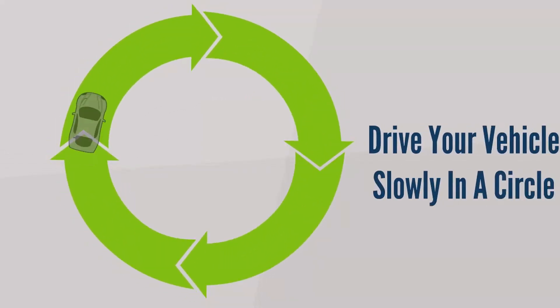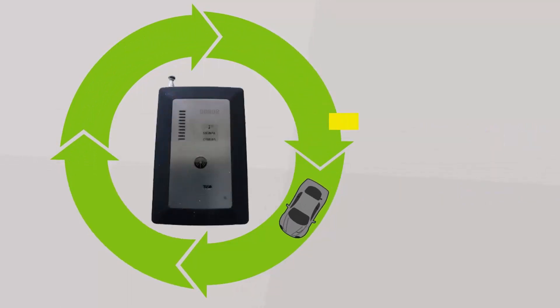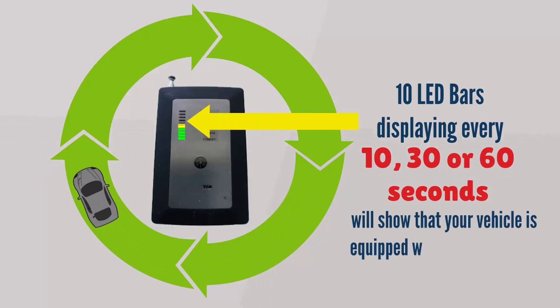Drive your vehicle slowly in huge circles while you monitor your MaxiTech bug sweep detector. If the LED displays all 10 bars every 10, 30 or 60 seconds, there is a 100% chance that your vehicle is equipped with a GPS tracking device.